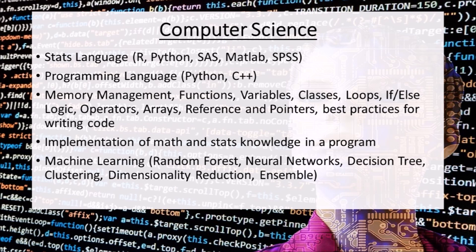The second main area is computer science. You need to know a statistics language and a general programming language. Python is great because it can be used for both. However, a lot of companies don't use Python, so it is definitely useful to know R, which is free and open source. Knowing MATLAB and SAS are great — SAS is used in banking, but it's expensive and hard to practice without purchasing it. The point of knowing computer science isn't just to make cool programs — in reality we need to take mathematics, statistics, and financial theory and apply them into tools we can use in our daily jobs.